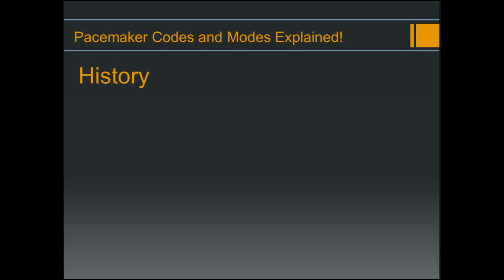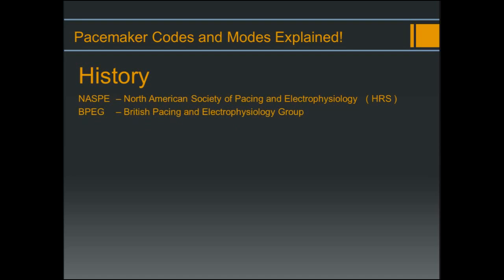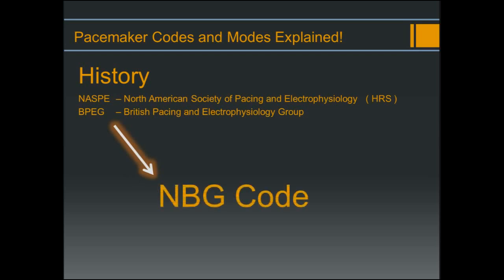In 1987, a committee from the North American Society for Pacing and Electrophysiology (NASPE, now known as Heart Rhythm Society or HRS) and the British Pacing and Electrophysiology Group (BPEG) adopted a revision of the ICHD code. It became known as the NBG code, which stands for the NASPE/BPEG Generic code.